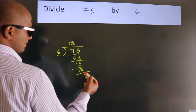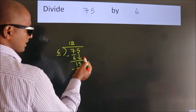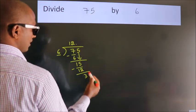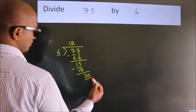After this no more numbers to bring it down. So what we do is we put dot take 0. So 30.